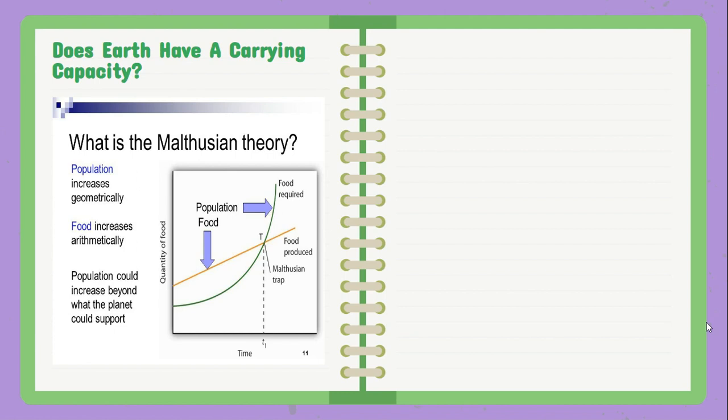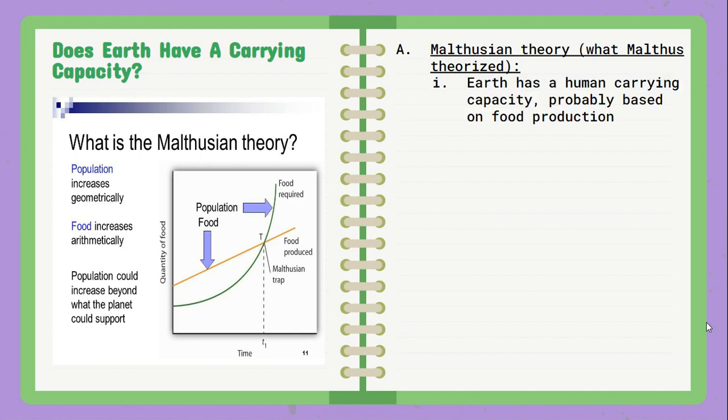Why is it important to understand how the human population grows? We need to ensure that we have enough resources for everyone, especially in the future. One of the first individuals to propose this idea — does Earth have a carrying capacity for humans? — was an economist by the name of Thomas Malthus, so that's where the Malthusian theory comes into play here. He proposed that Earth's carrying capacity for humans is really based upon food production.